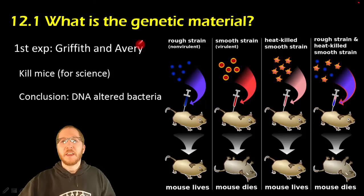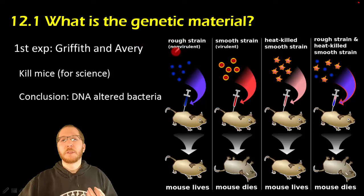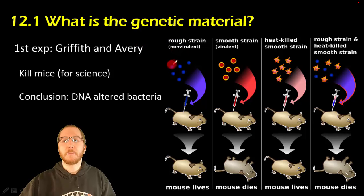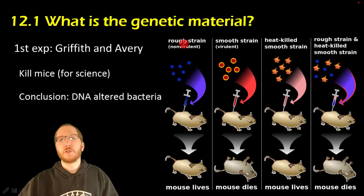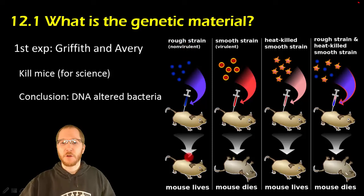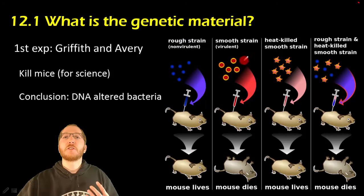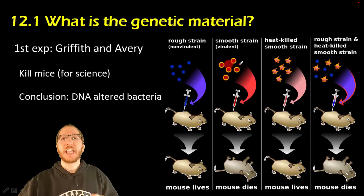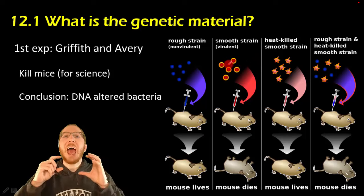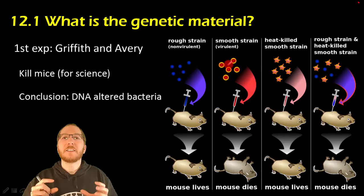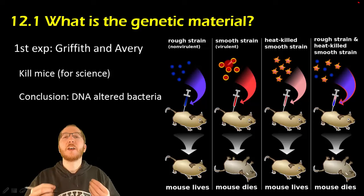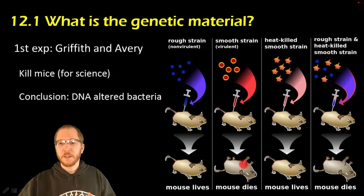Here's how it worked: they infected mice with a particular strain of bacteria that lacked something called a capsule — the surrounding piece — so it was called the rough strain. This strain did not kill the mouse. There's another strain of that same bacteria that has an outer capsule. Having that outer capsule makes it lethal, so it would kill the mice — as you can see, the mouse did not make it.